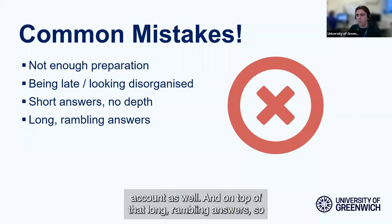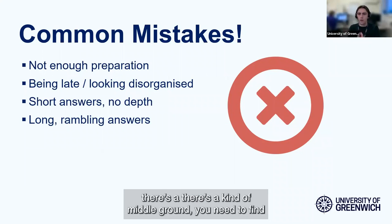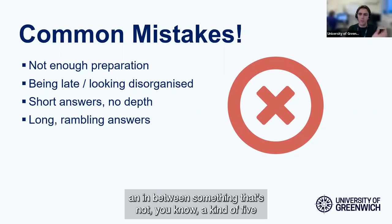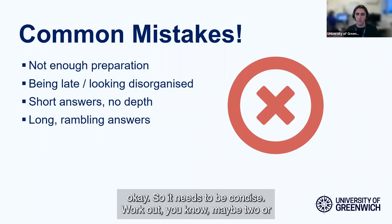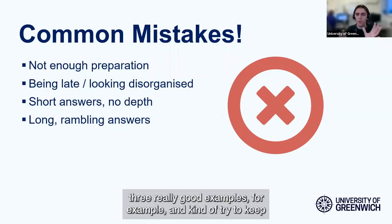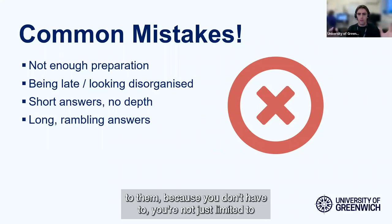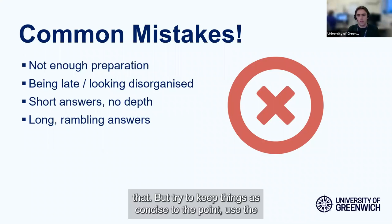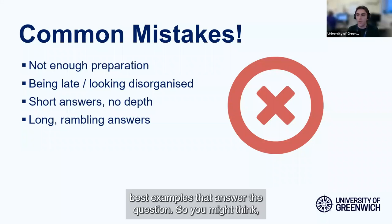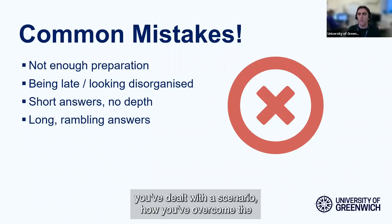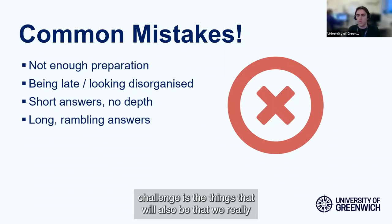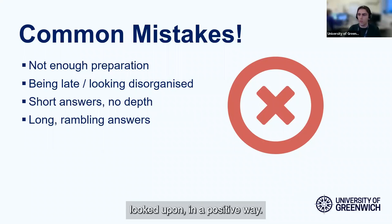There's also the problem of long rambling answers. There's a middle ground you need to find — not a five second answer, but also not a ten minute answer. It needs to be concise. Work out maybe two or three really good examples and try to keep to them. Try to keep things concise and to the point, use the best examples to answer the question. Use the one that will make sure it fully answers the question — how you've dealt with a scenario, how you've overcome a challenge. These are things that will be looked upon in a positive way.